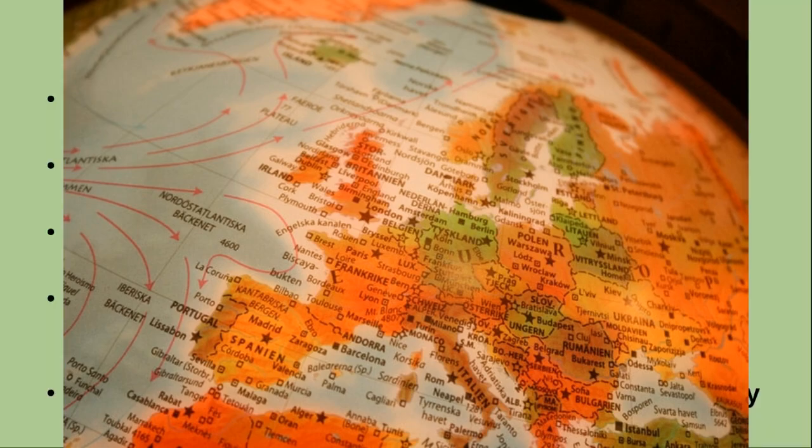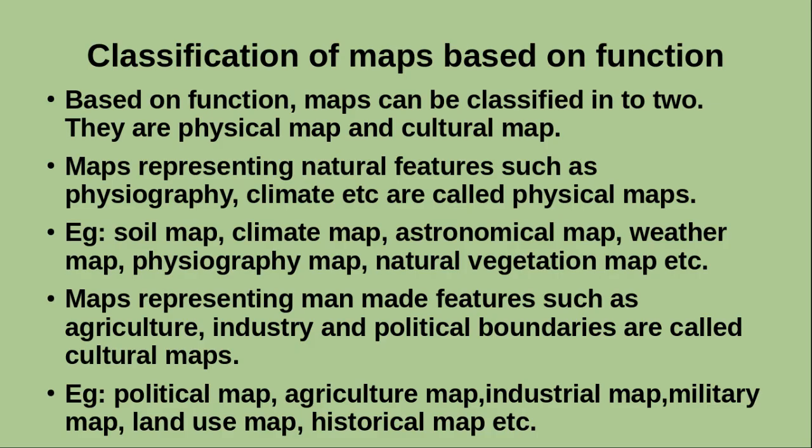Examples of physical maps include soil map, climatic map, astronomical map, weather map, physiography map, natural vegetation map, etc.